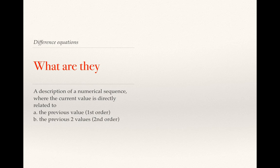So what are they? They're a description of a numerical sequence, and there are two types. First order difference equations are where the current value is only described by the previous value. And second order difference equations are where the current value is described using the previous two values.